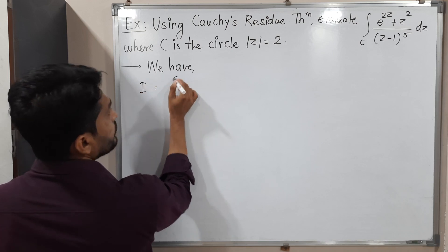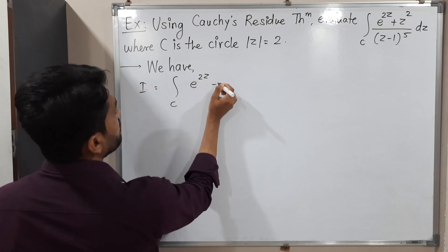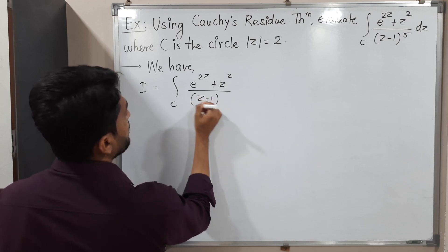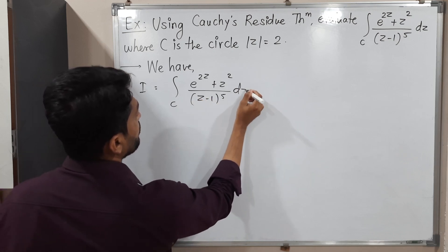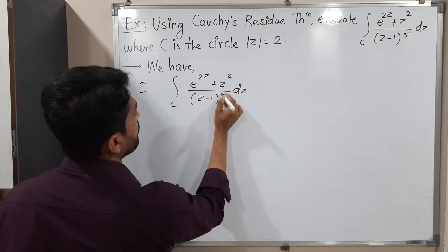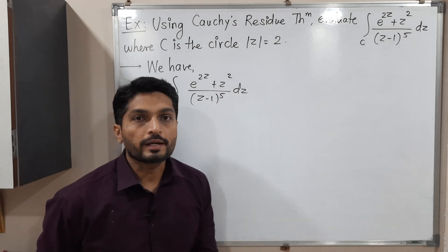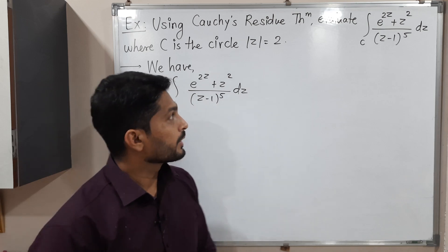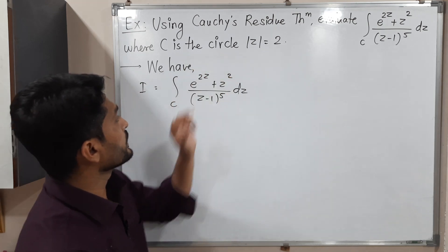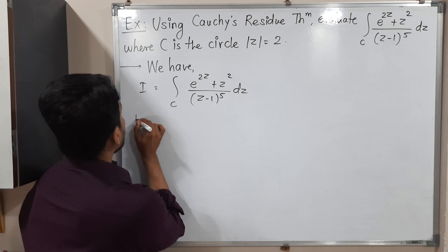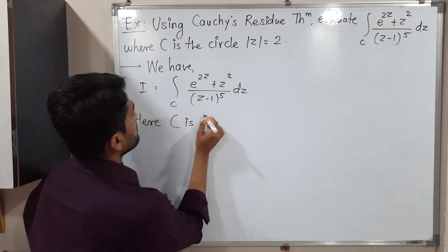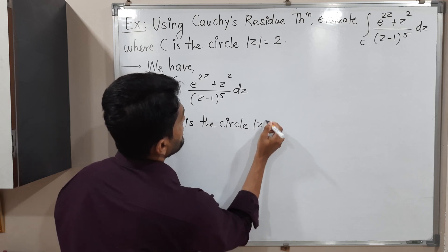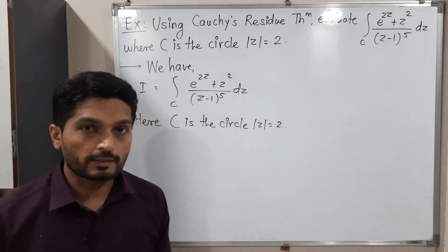I is equal to integration over C of E raised to 2Z plus Z squared upon Z minus 1 raised to 5. We have to find this integral, and the most important thing is the closed curve C. So let us mention what C is here. C is the circle |Z| = 2. So let us draw the circle first.